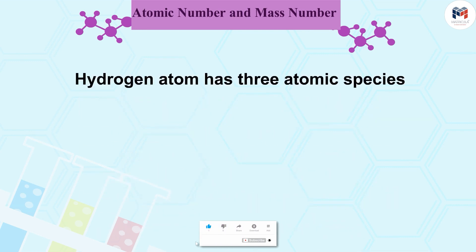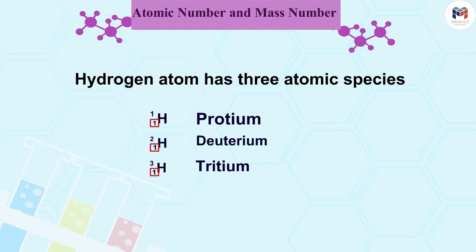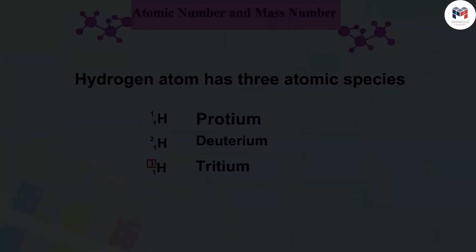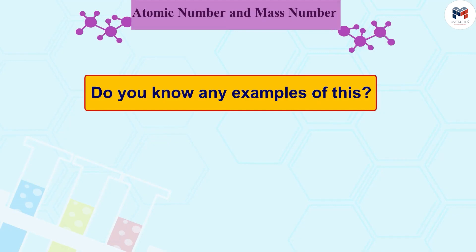For example, take the case of hydrogen atom. It has three atomic species: protium, deuterium, tritium. They all have the same atomic number but the mass numbers are 1, 2 and 3 respectively.